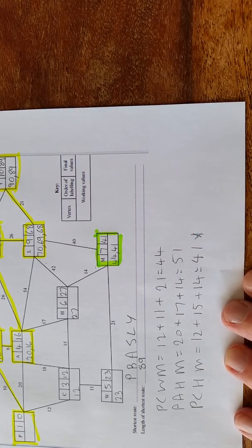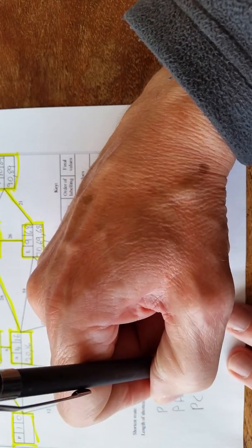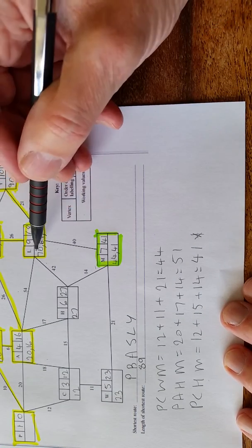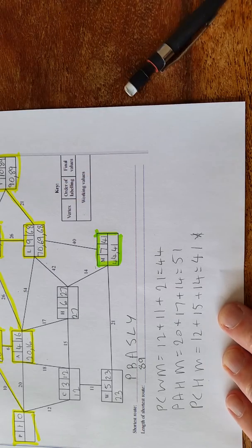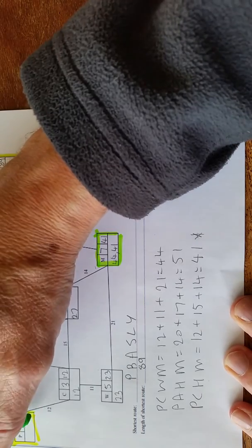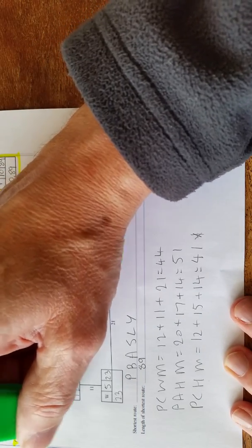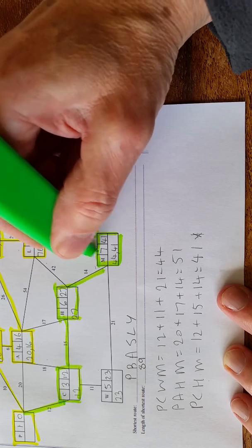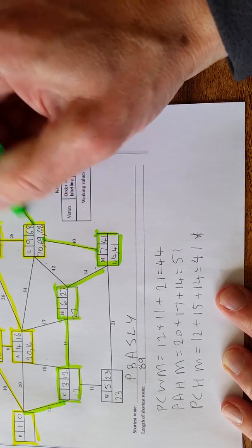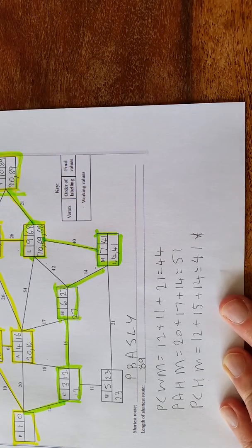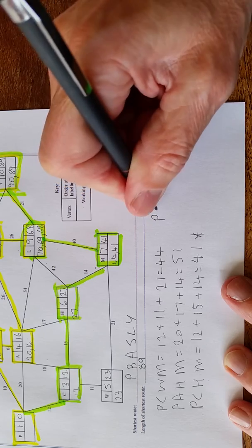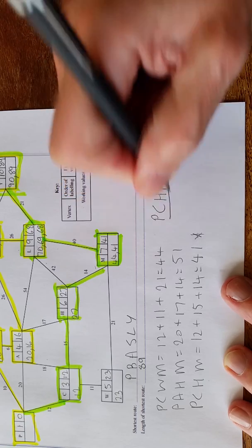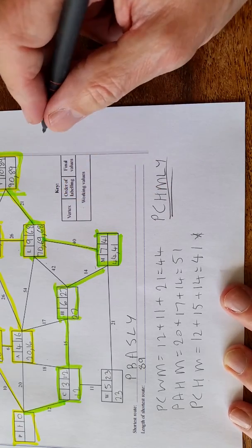So we've got PCHM. Now that's from P to M. And then we finish off looking at the shortest. As you can see, 14 and 42 is longer than 40. So it's got to be this route here. The shortest one there is up to L and then Y. So I'll finish off. The route is P, C, H, M, L, Y. That's the new route.